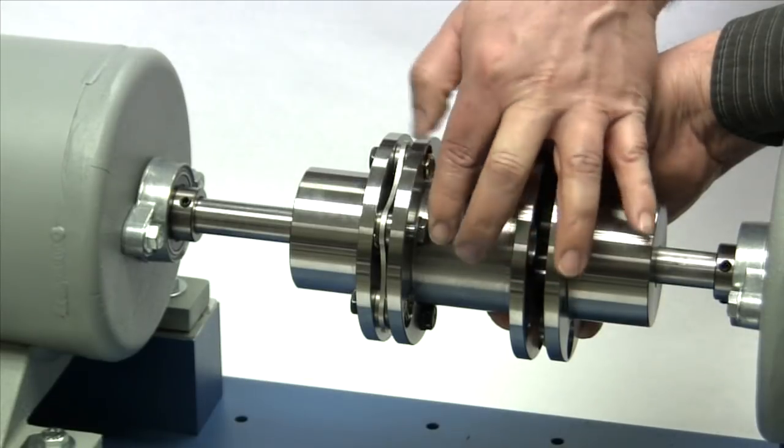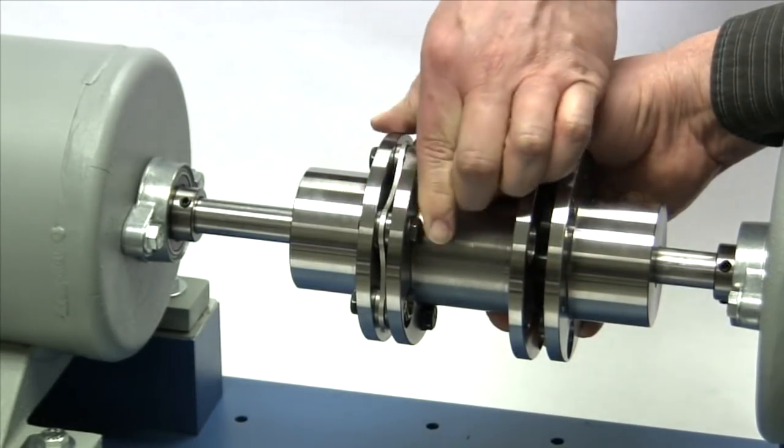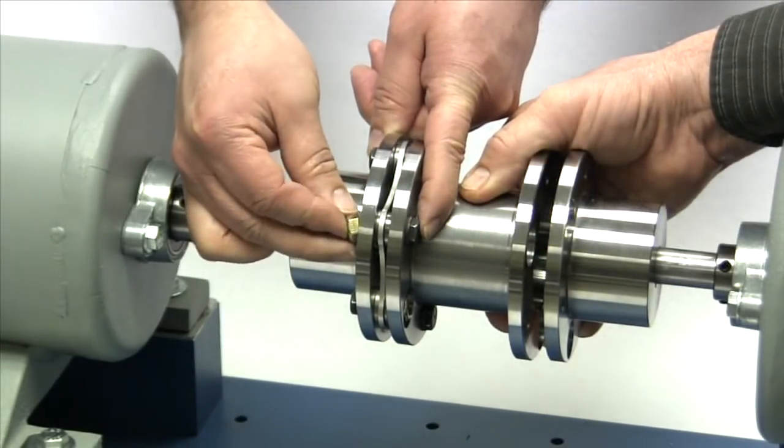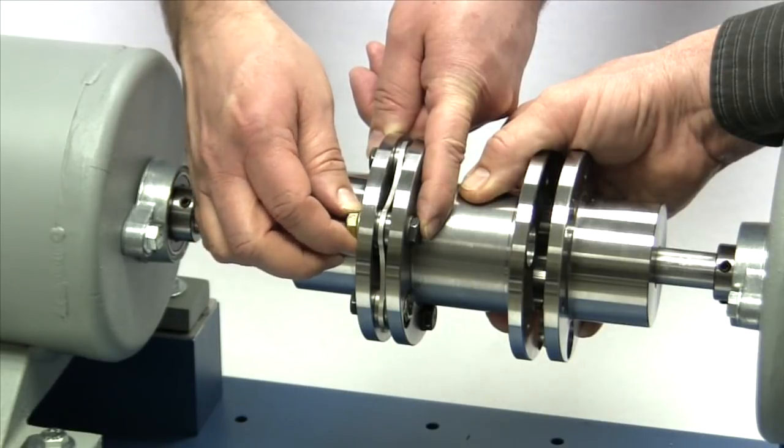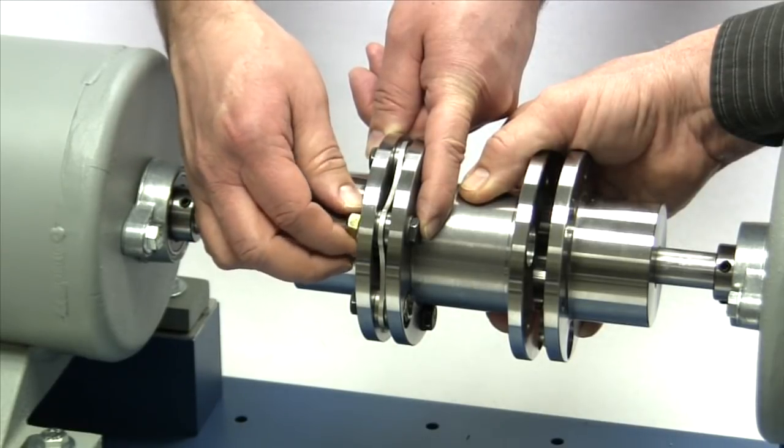Next, insert the bolts through the small holes in the spacer flange and through the bushings in the disc pack. Place a lock nut on each of these bolts through the large holes on the hub and hand tighten.